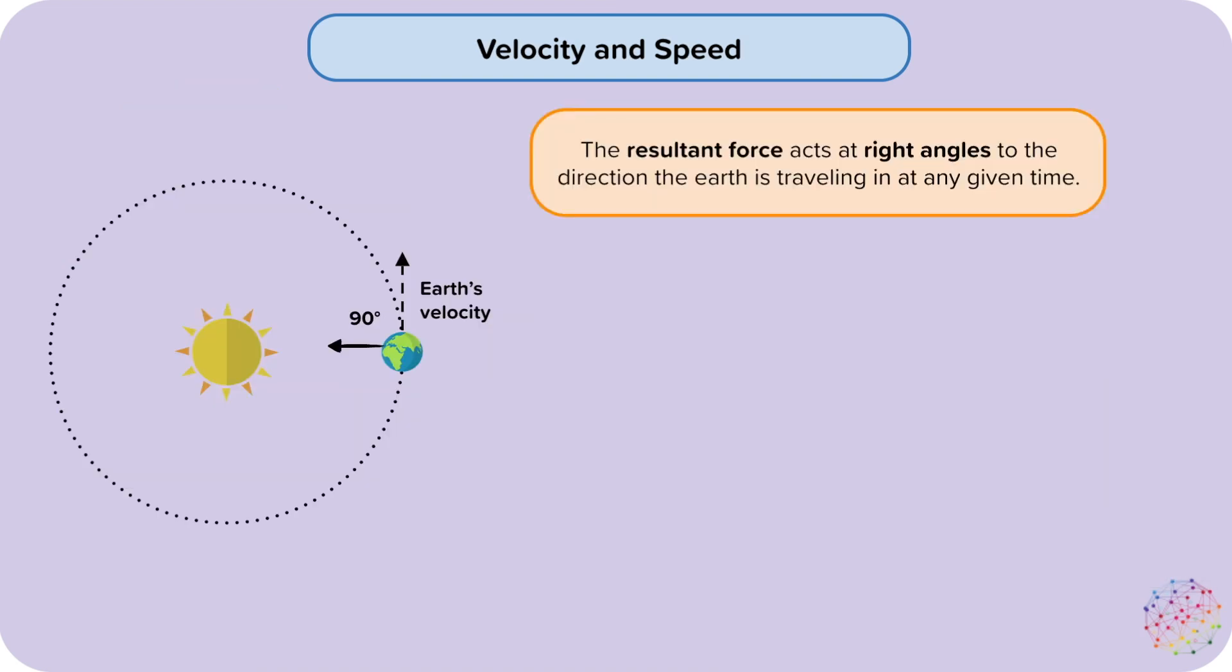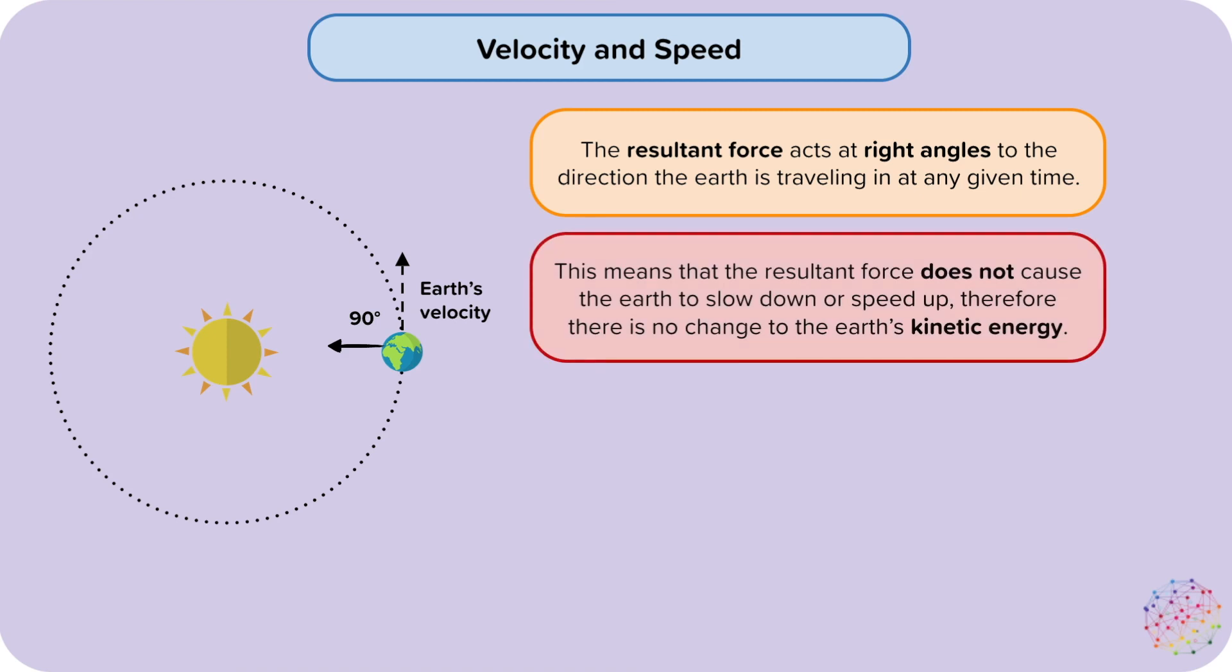In the case of the Earth, the resultant force acts at right angles to the direction the Earth is travelling in at any given time. This means that the resultant force does not cause the Earth to slow down or speed up. Therefore, there is no change to the Earth's kinetic energy.